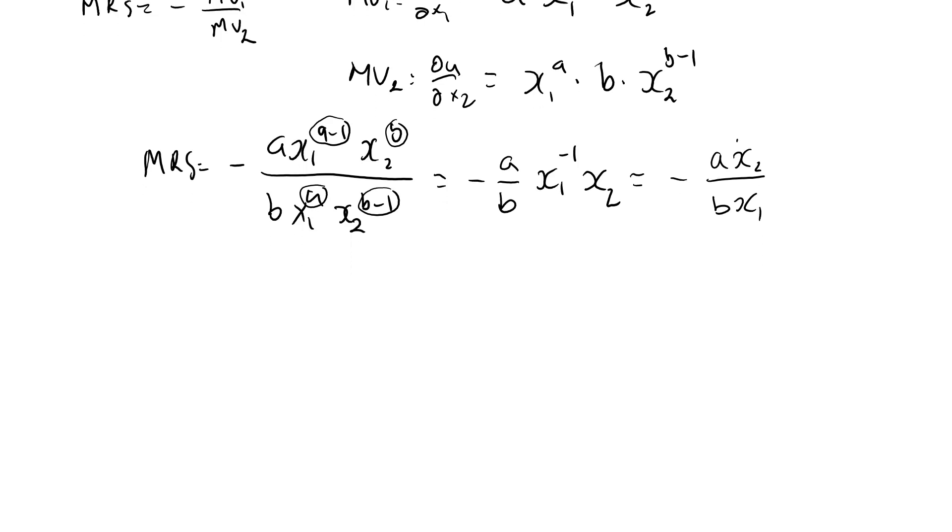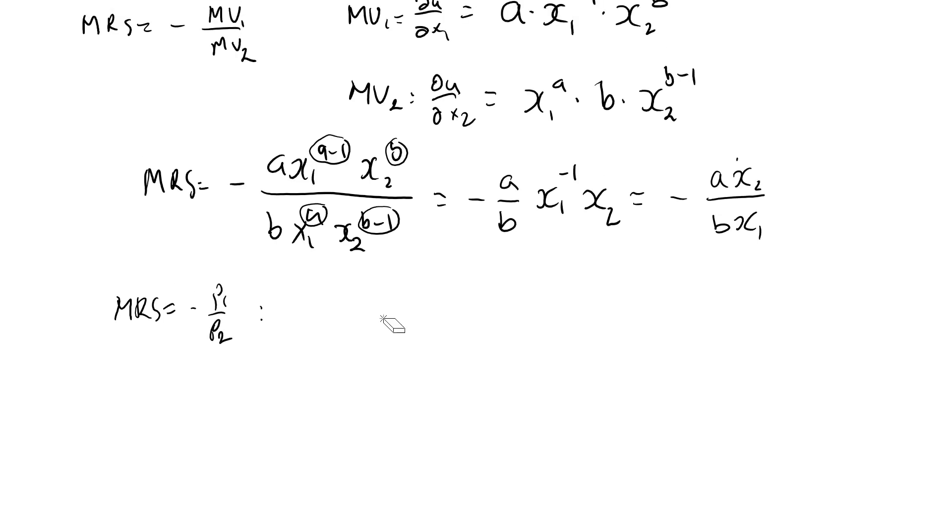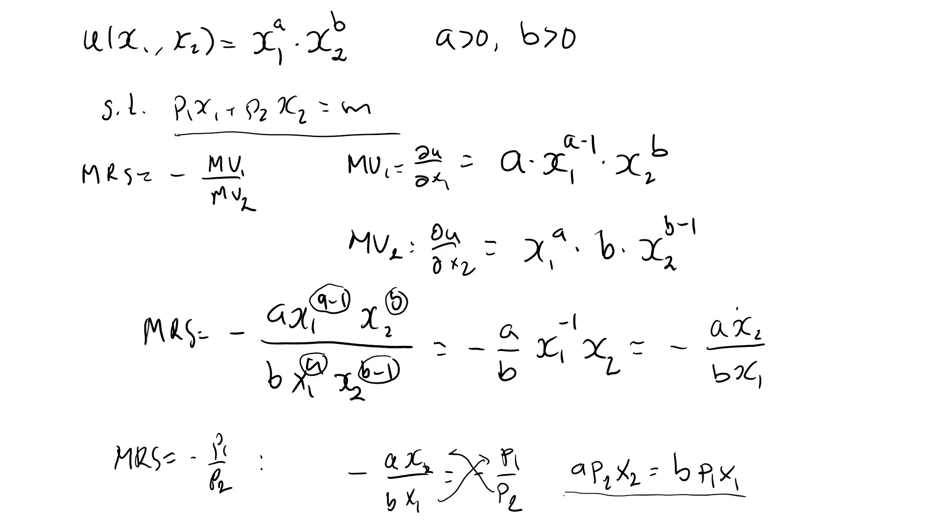For a bundle to be optimal, we need to set MRS equal to minus p1 over p2. So we have minus ax2 over bx1 equal to minus p1 over p2. Remove the minus sign, put p2 up here, and bx1 up here, and we have ap2x2 equal to bp1x1. This is one of the equations that the optimal bundle must satisfy, and this is the second one.